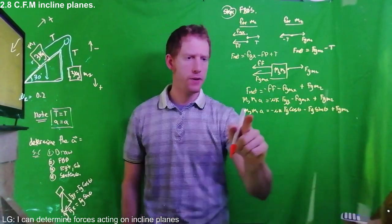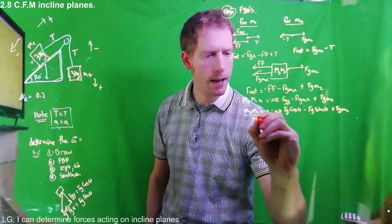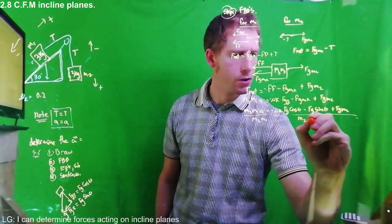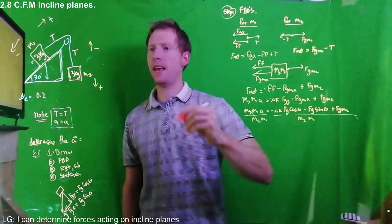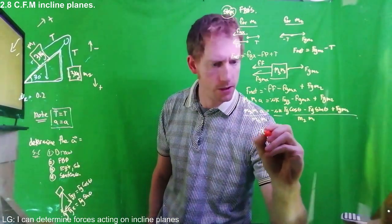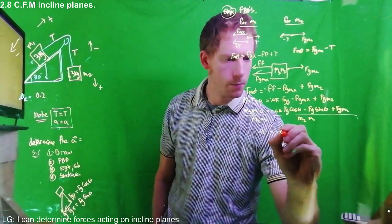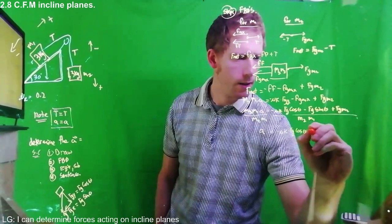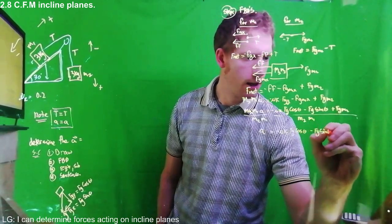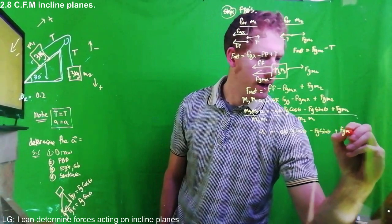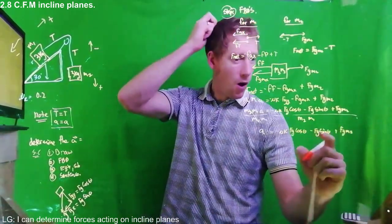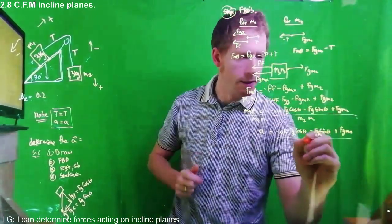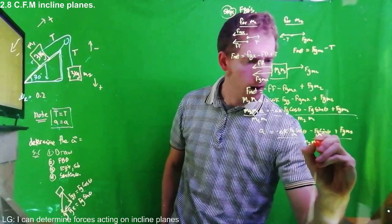We have everything we need and we're solving for A, so divide both sides by (M1 + M2). Therefore, the acceleration of the total system is: a = [−mu_k × Fg cosine theta − Fg sine theta + Fg(M2)] divided by (M1 + M2), where Fg terms refer to M1 on the ramp.